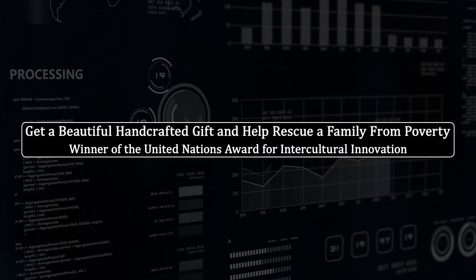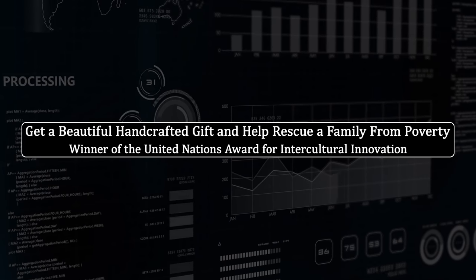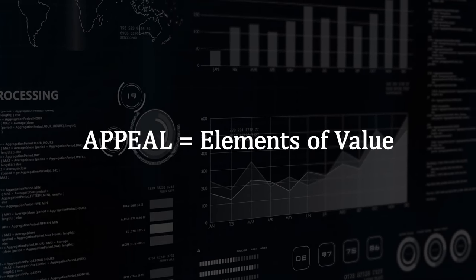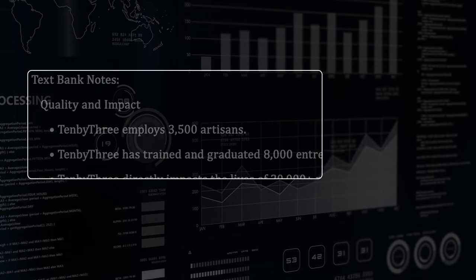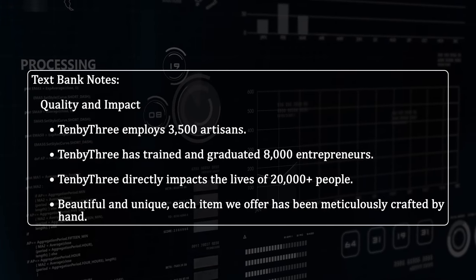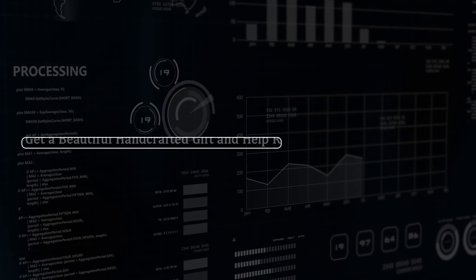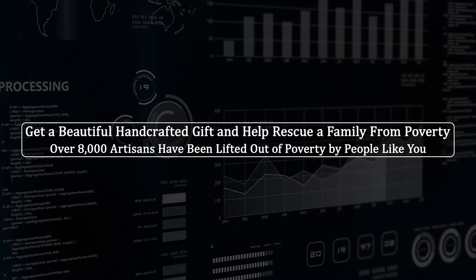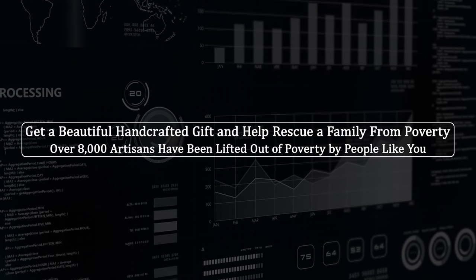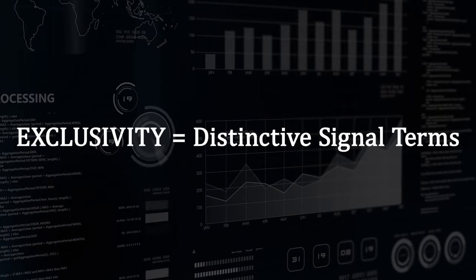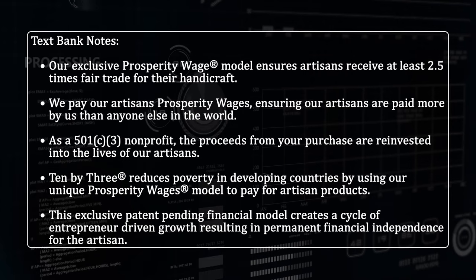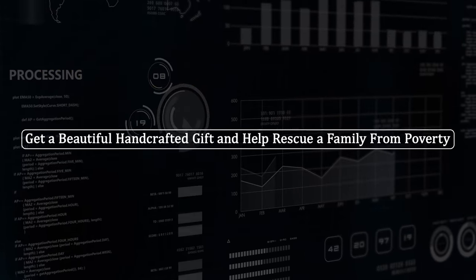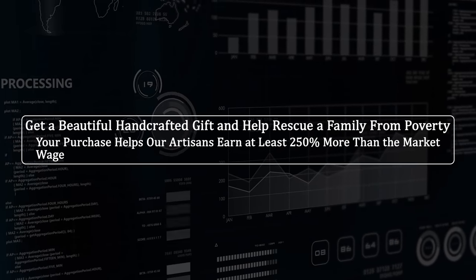Here's the credibility subheadline: 'Winner of the United Nations Award for Intercultural Innovation.' Do you see the power of that? But it might not be the right one — you might want to double down on the core appeal of the offer. If that's the case, focus on elements of value: go back to the text bank, look for ways to demonstrate quality and impact, and draw out a key point: 'Over 8,000 artisans have been lifted out of poverty by people like you.' Finally, if you want to emphasize exclusivity using distinctive signal terms: 'Your purchase helps our artisans earn at least 250% more than the market wage.'